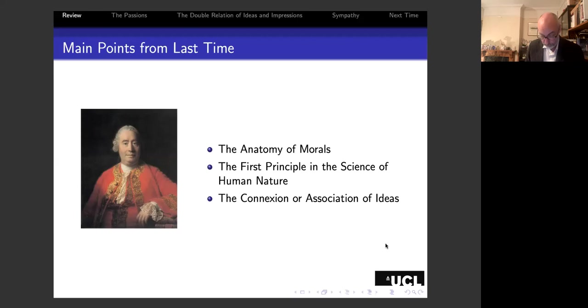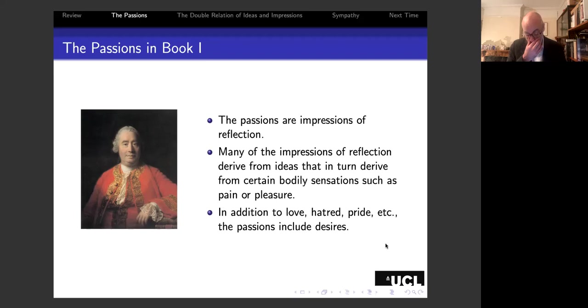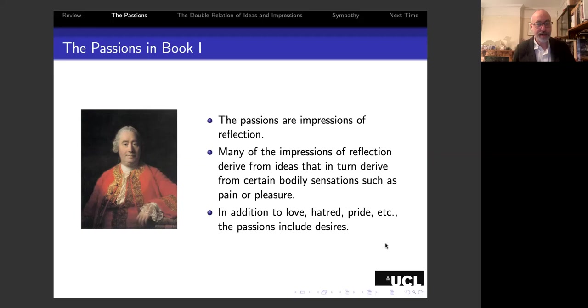Today I want to talk about sympathy as it arises in Book Two of Hume's Treatise of Human Nature. In Book One of the Treatise, Hume makes three important claims about the passions. Passions are impressions of reflection, and many impressions of reflection derive from ideas that in turn derive from certain bodily sensations, particularly pain and pleasure.